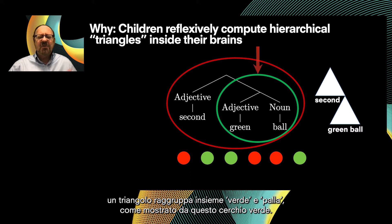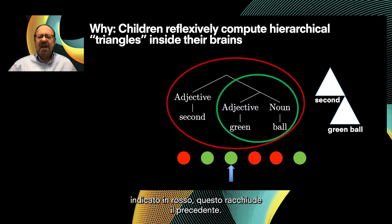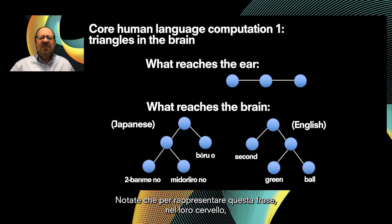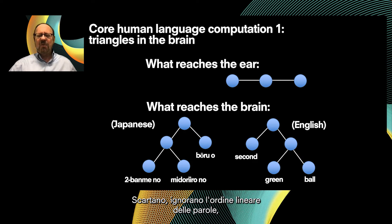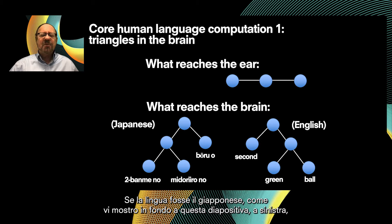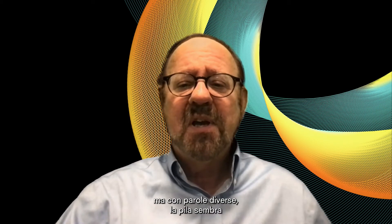I schematically show that by this white triangle — the triangle groups 'green' and 'ball' together, so it is looking for the set of all green balls. When we add the larger circle that encompasses the previous one, the children just pay attention to the hierarchical structure alone — they throw away, they ignore the linear order of the words, even though that's what we hear. If the language were Japanese, children construct the same stacked hierarchical triangles as in English but with different words, like a mirror image — and they get the same meaning.